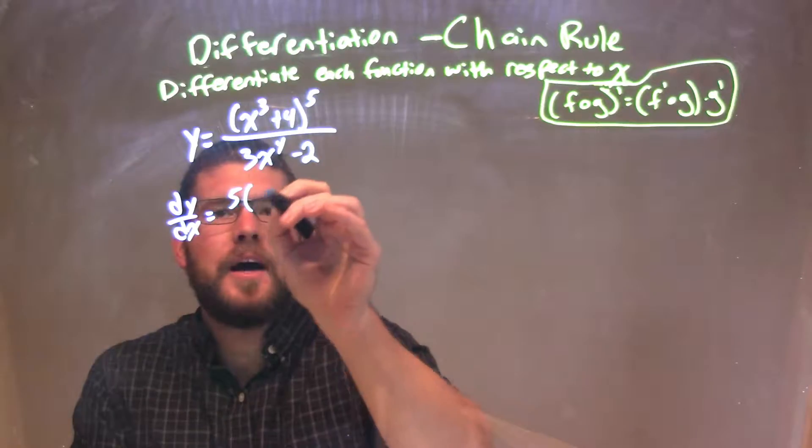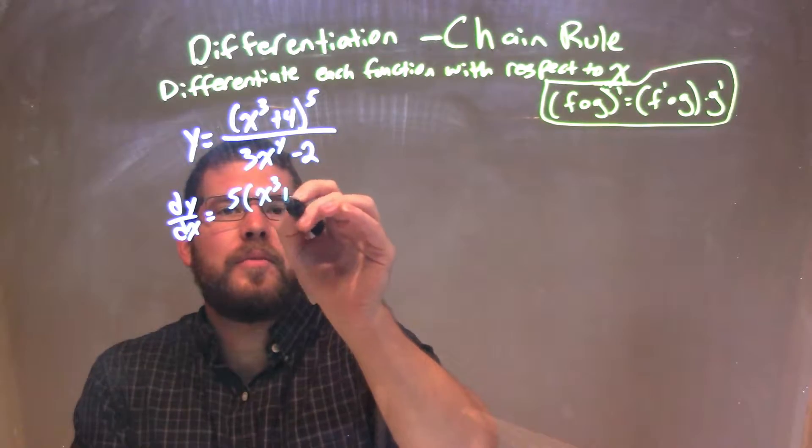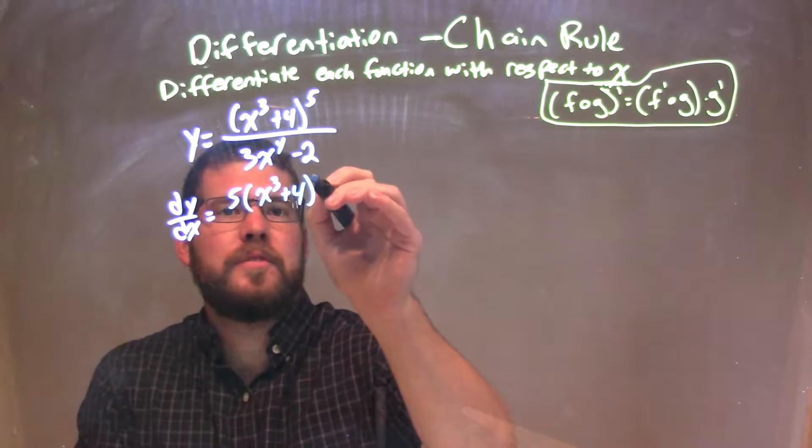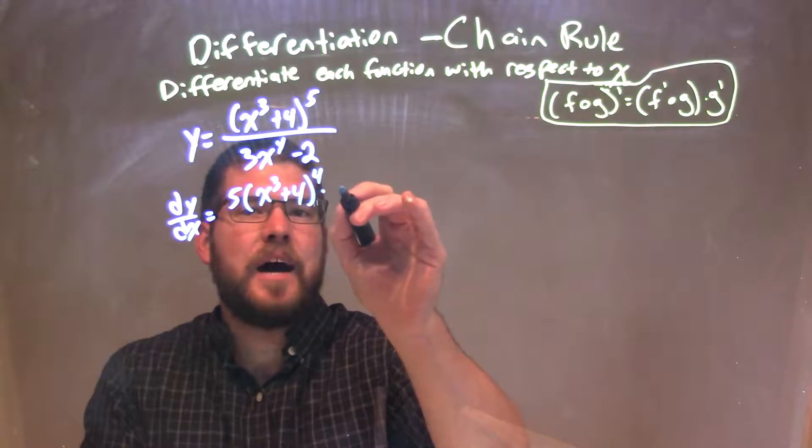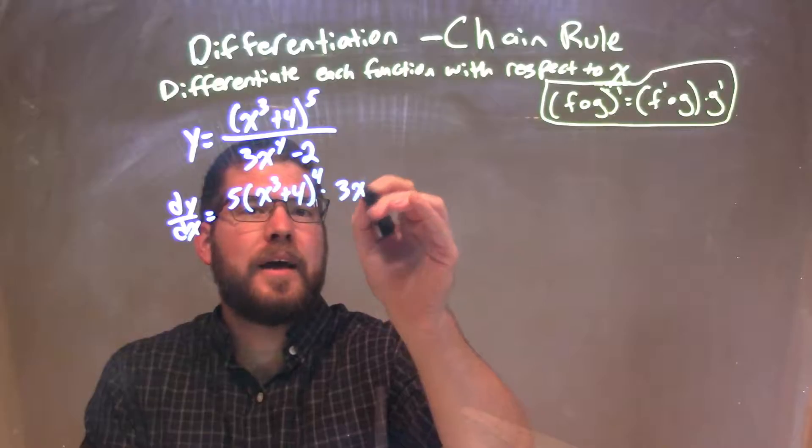So we have 5 times x to the third plus four, here I'm applying the chain rule to the fourth power, times the derivative of the inside, which is 3x squared.